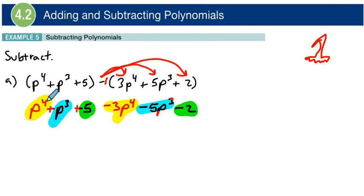So let's do that. P to the power of 4 minus 3P to the power of 4 is a negative 2P to the power of 4, because there's our ghostly 1. 1 minus 3, negative 2. 1P cubed minus 5, 1 minus 5 is a negative 4P to the power of 3. And then right here, 5 minus 2 is a positive 3.